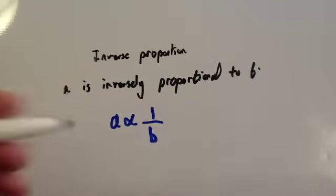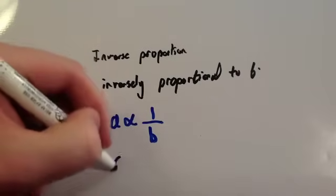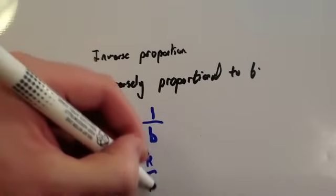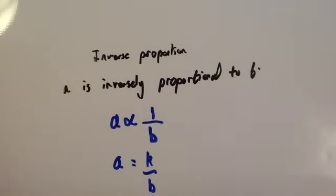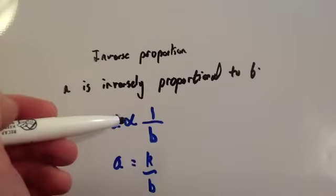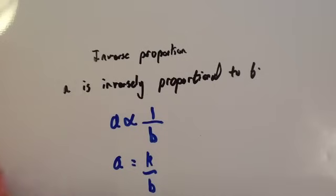And then, whenever you want to get rid of the proportional sign, you write A equals K over B, because you're timesing this by K. Just like before, whenever you want to get rid of the proportional sign, you times it by K, the constant of proportionality.